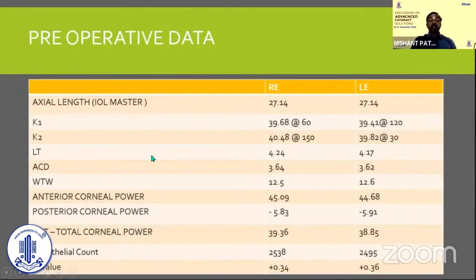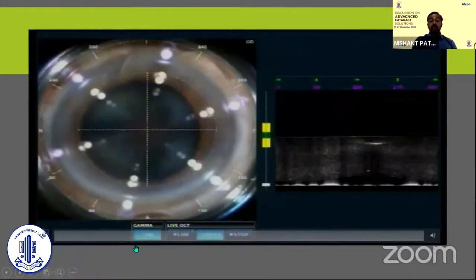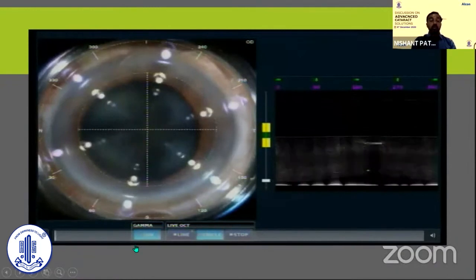His pre-operative evaluation included IOL Master measurements, Swept-Source OCT, online IOL calculation for both eyes, 2K measurement of anterior and posterior corneal power, and online calculation using the one-cup method. Pre-op data included K readings, lens thickness, ACD, white-to-white, anterior and posterior corneal power, total corneal power, endothelial cell count, and Q value.